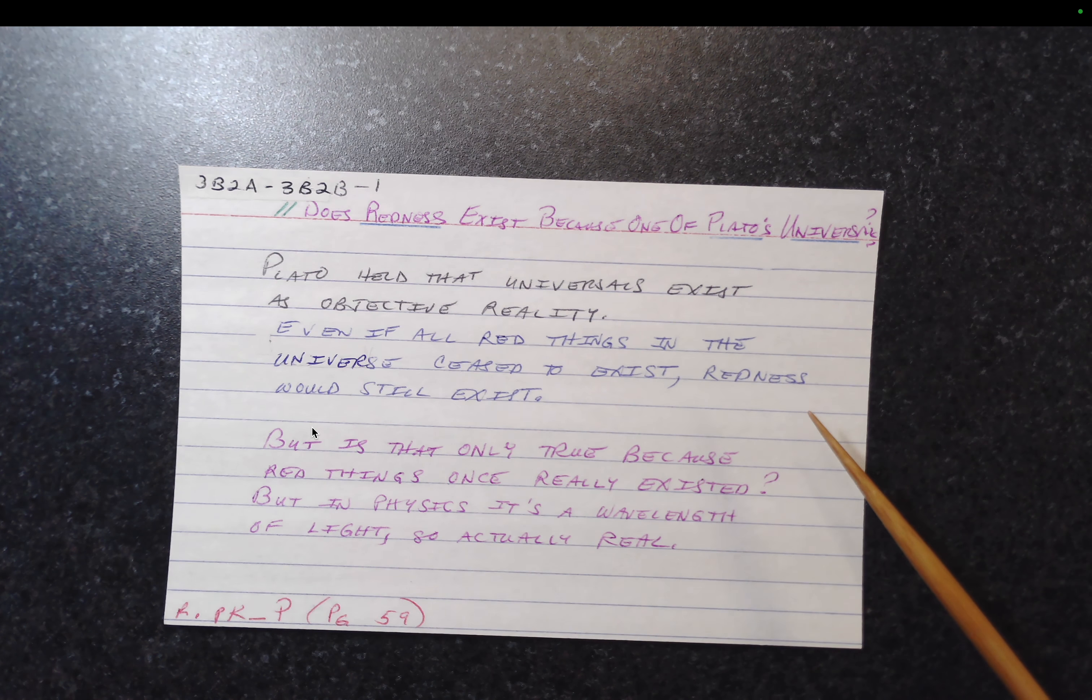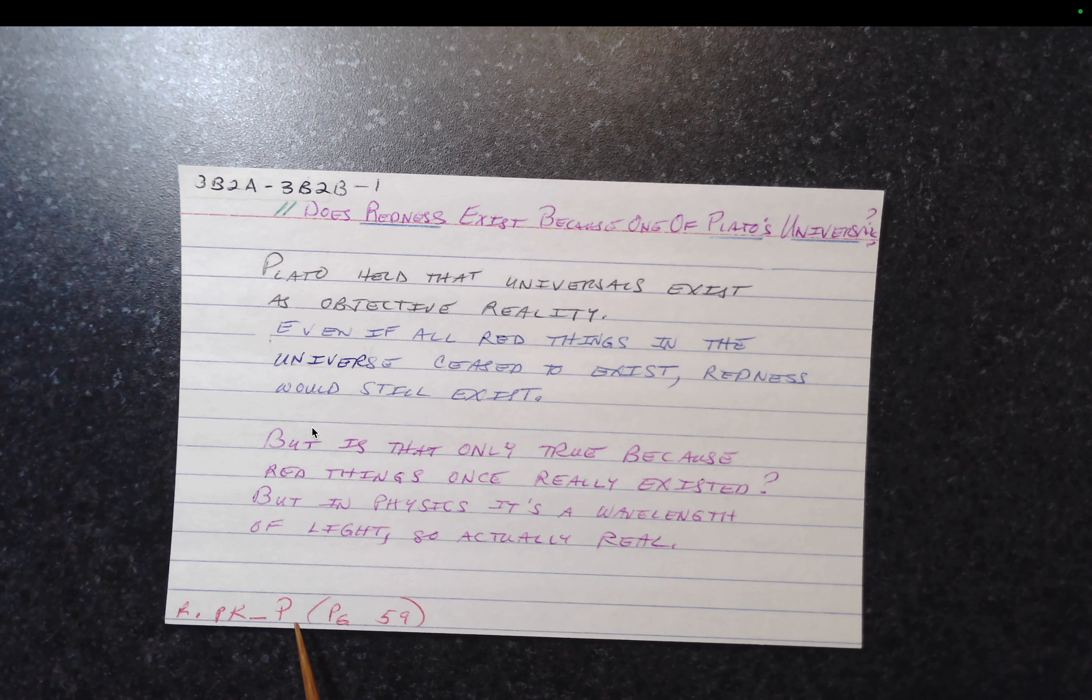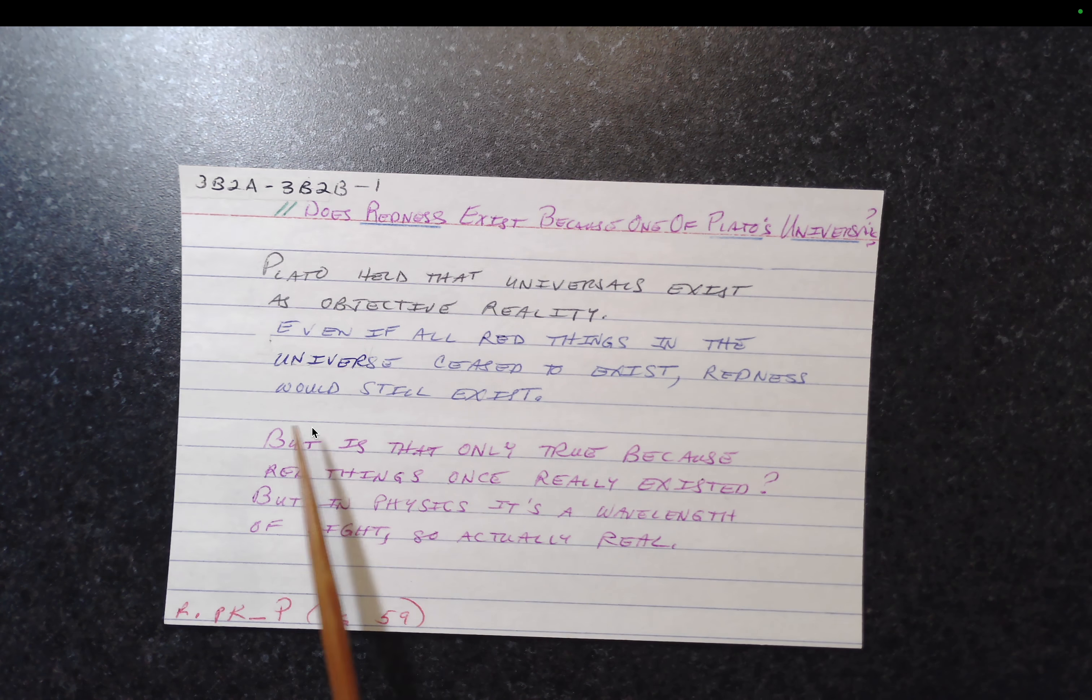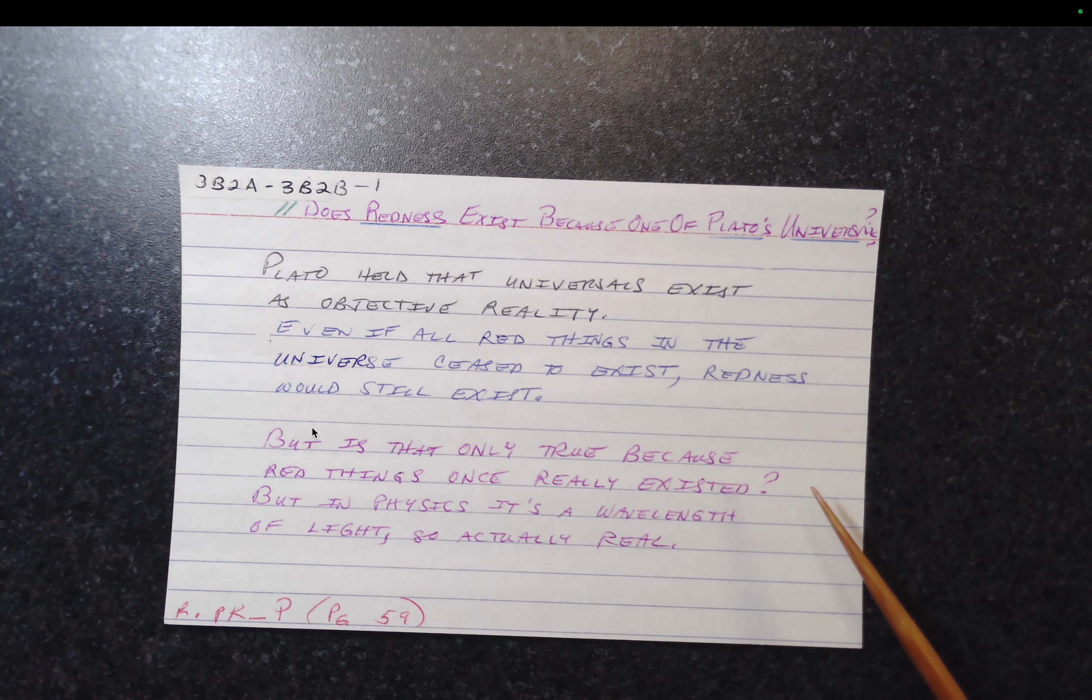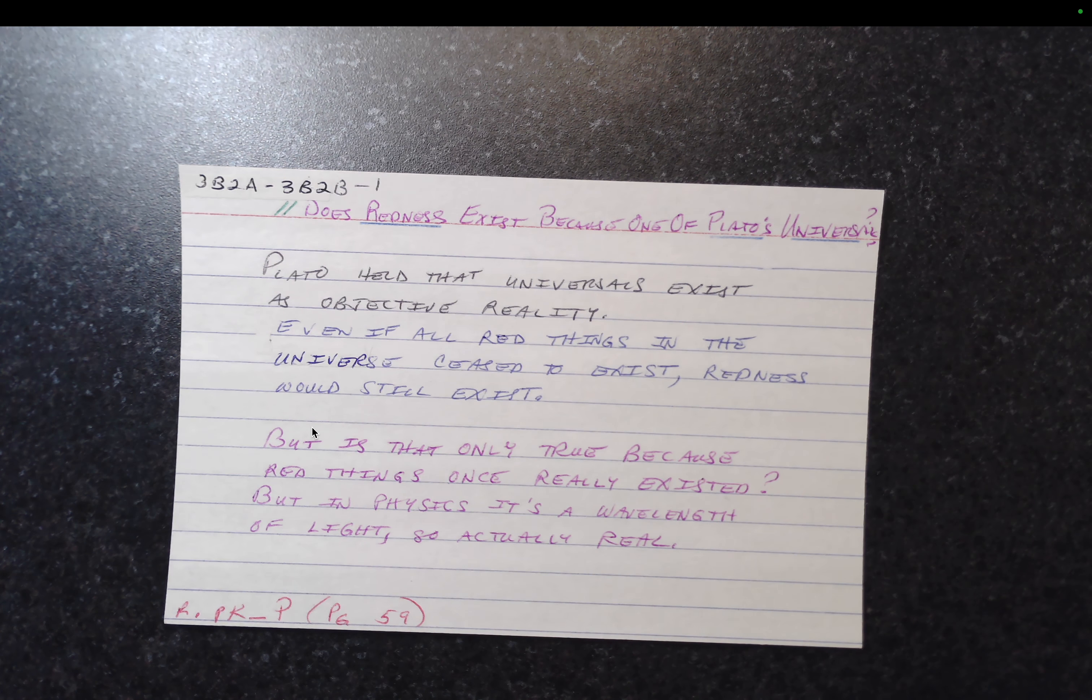The specific information is that Plato held that universals exist as objective reality. And the quote from Peter Kreef's philosophy on page 59 is that even if all red things in the universe ceased to exist, redness would still exist. My response to that is that only true because red things once really existed. And then I made the note that but in physics, it's a wavelength of light. So yes, it is real. But in my world, I didn't have anything about Plato, because anything I learned about Plato, I learned before I kept a zettelkasten. So it was pretty slim pickings for where to place this card. So it was kind of facing the question that my viewer wanted to know, well, am I going to make a Plato space card?